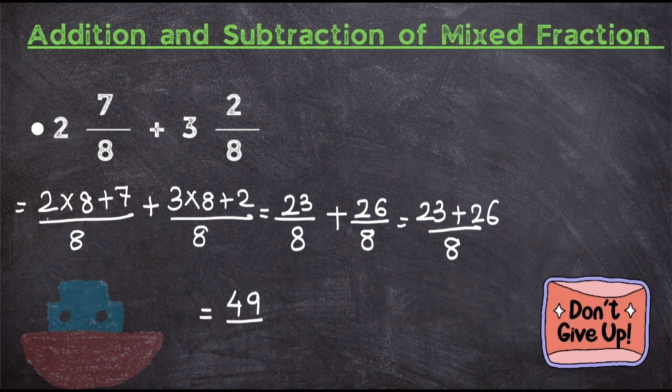This gives you 49 upon 8. Do you think this is the simplest form? The two numbers will not go in the table of any one number, but what you can see is it's an improper fraction. When you have an improper fraction, you have to convert it to a mixed fraction for the simplest form.